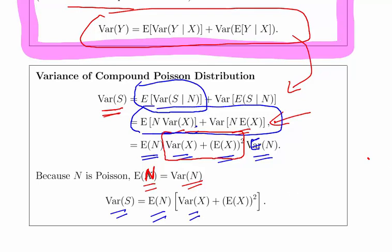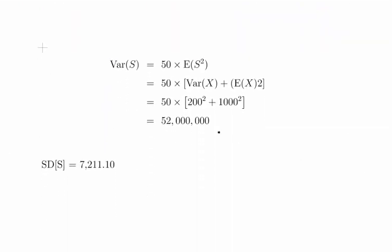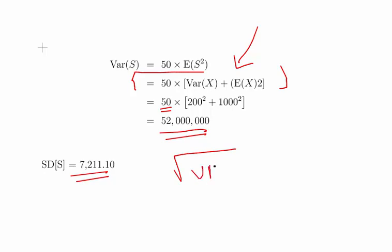Essentially, what we're doing here is picking this up and putting in our numbers: 200² plus 1000², which were given previously. 50 times that, so overall the variance of S is 52 million, and therefore the standard deviation is the square root of the variance, which is the square root of 52 million, which is 7,211.10.